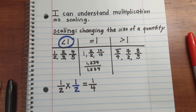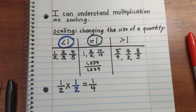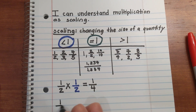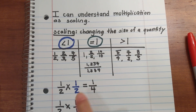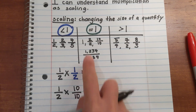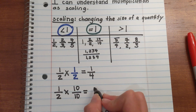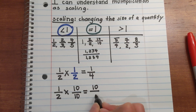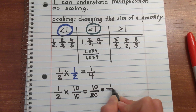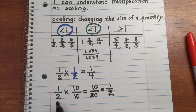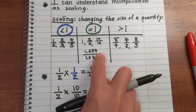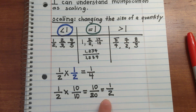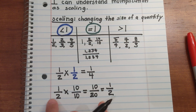Now the middle one — equal to a whole. Same fraction, one half. This time I'll multiply it by ten over ten, which is equal to one whole. One half times ten over ten equals ten over twenty, which equals one half. One half is equal to one half — it stays the same, it doesn't scale. If you multiply any fraction or any quantity by something equal to a whole, it's going to equal the same number you started with.